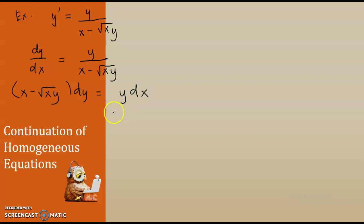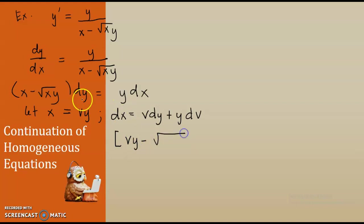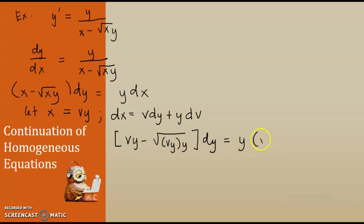If we use dy, we substitute for y. Looking at this, simplification would be harder that way. Instead, let x equal to vy, therefore dx equals v·dy plus y·dv. Let us change x into vy: we have vy minus the square root of vy times y, then times dy, equal to y times dx which is v·dy plus y·dv.